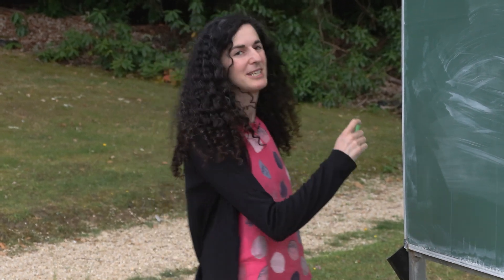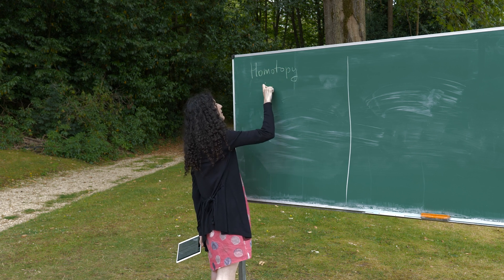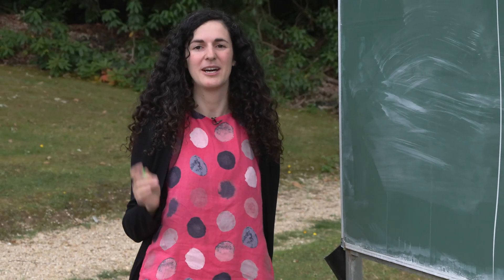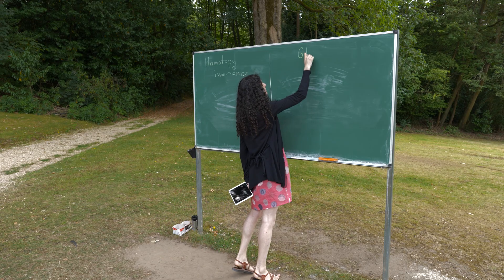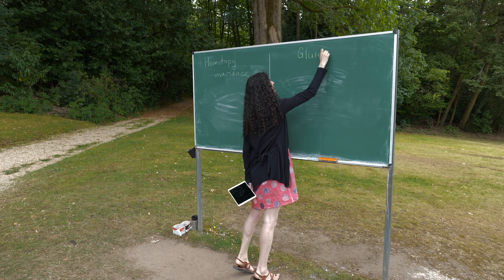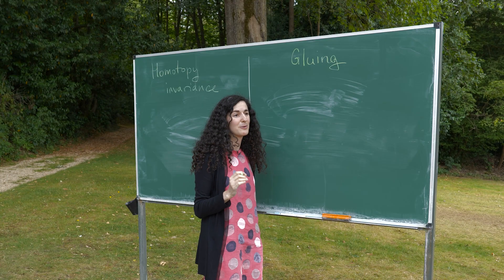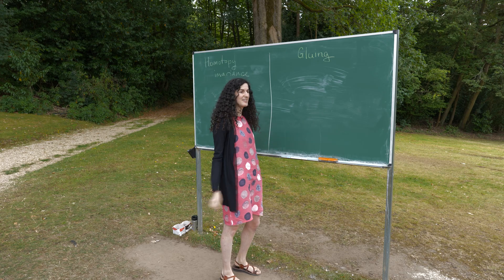Our examples today will be of two different kinds. One example will be given by homotopy invariants. This rule allows one to compute the value of an invariant like K-Theory on a constant family of varieties. Another example will be given by a certain kind of gluing, which allows to detect the value of an invariant globally when it is known locally.